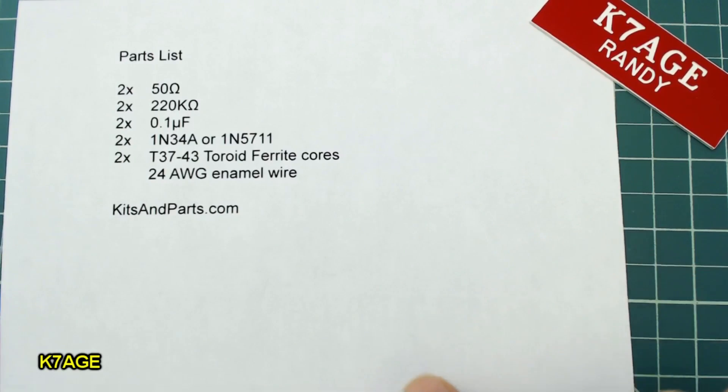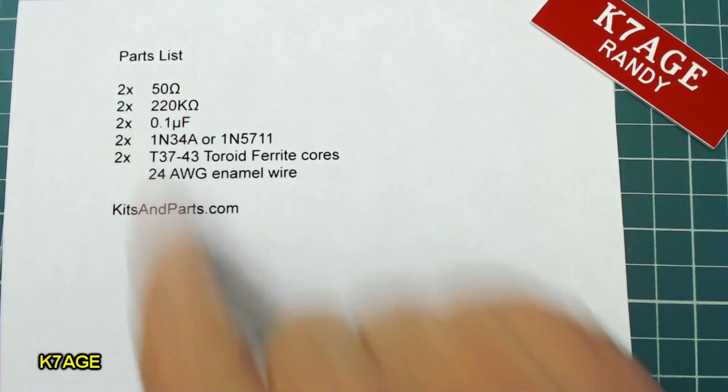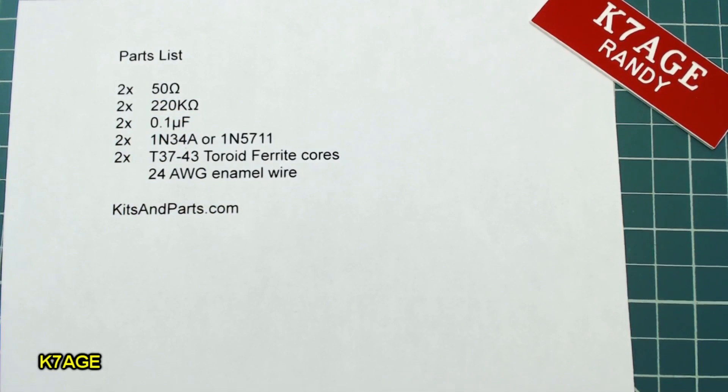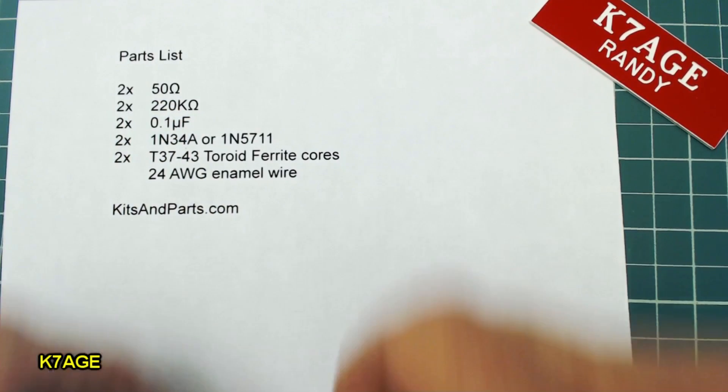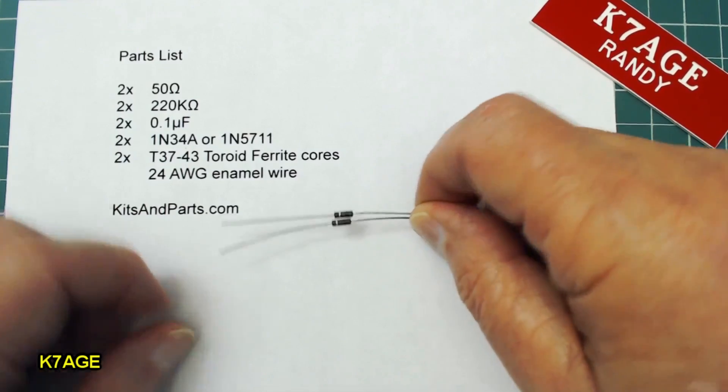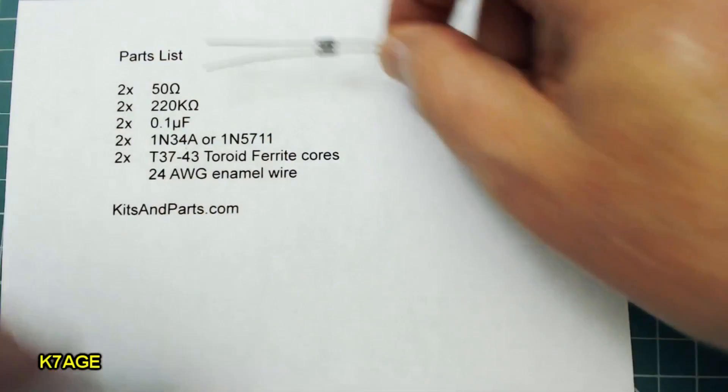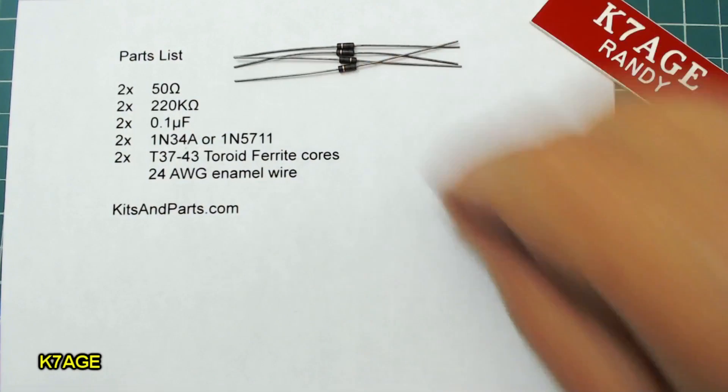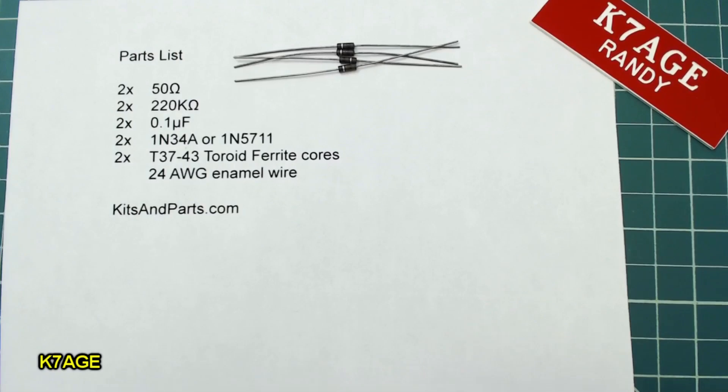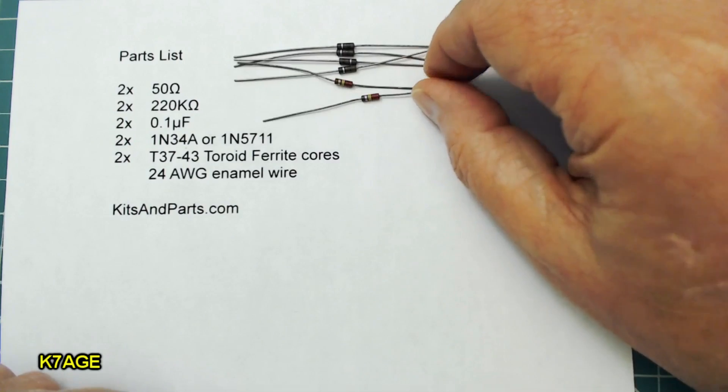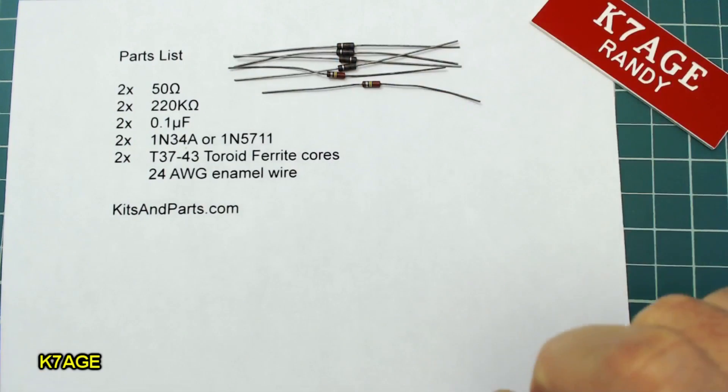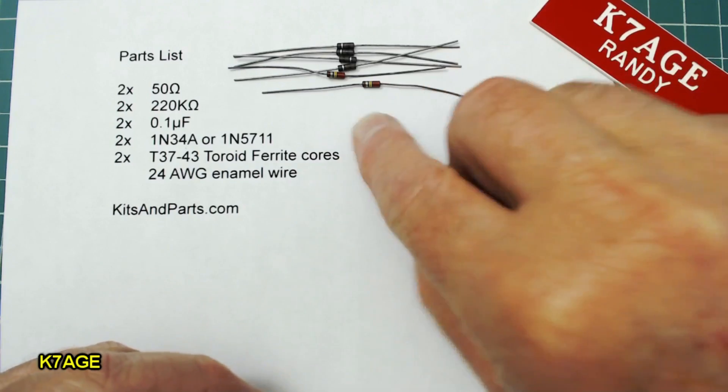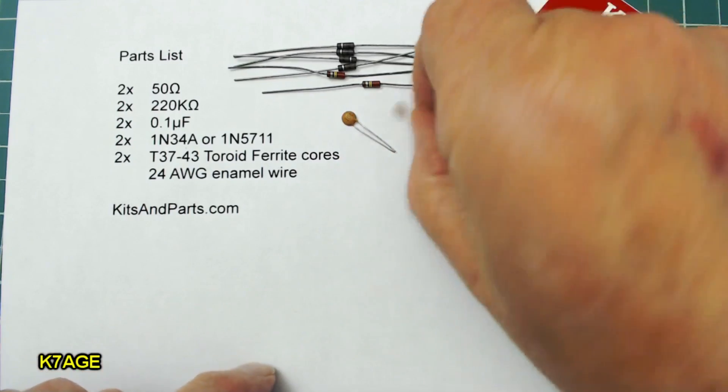Okay, here's the parts list for the meter. I need two 50-ohm resistors. Well, I didn't have any 50-ohm resistors in my junk box, but I do have 100-ohm resistors. And if you take two 100-ohm resistors and connect them in parallel, you'll have 50 ohms. So there's four 100-ohm resistors for that. Then I need two 220K-ohm resistors, red, red, yellows. Next thing I need is two 0.1 microfarad little disc ceramic capacitors. They're labeled 104.